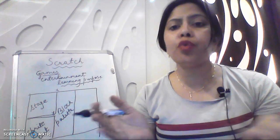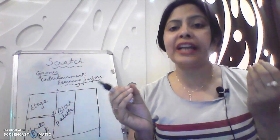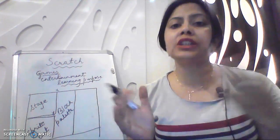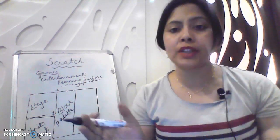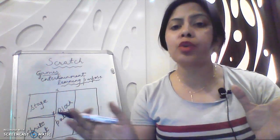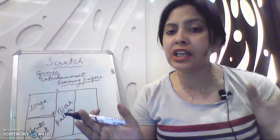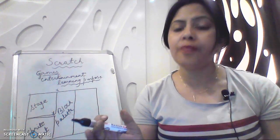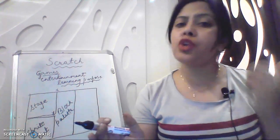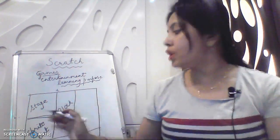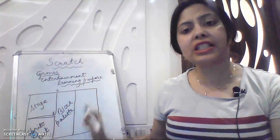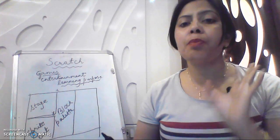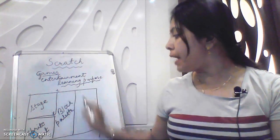The third block is for sound. Suppose when you watch animation — you like the sound. Cartoons like Chota Bheem and Doraemon — all the cartoons are acting, talking, and audible on screen. You can make the same kind of cartoon on this screen. So movement, looks, and sound are the three major blocks we have on this block palette.